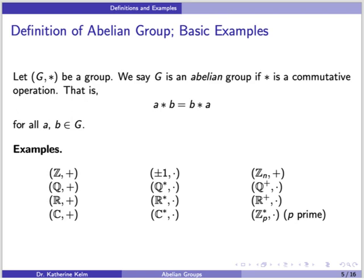Most of the groups that you've seen so far are abelian groups. For example, Z under addition, Q under addition, R under addition, C under addition. The set of all non-zero rational numbers under multiplication is also an abelian group, and same with R-star and C-star. Z_n is a group under addition. The set of positive rational numbers also forms a group under multiplication, and the same with the set of all positive real numbers under multiplication.